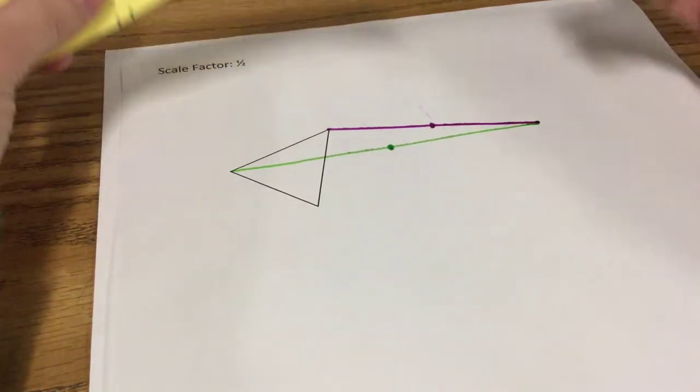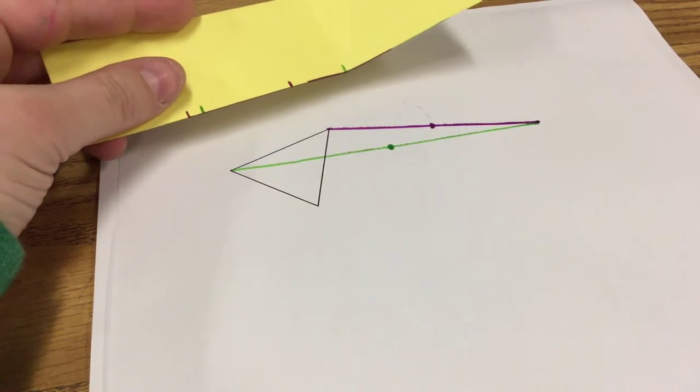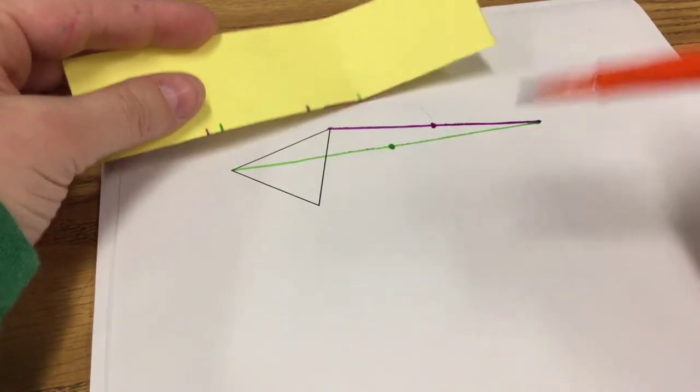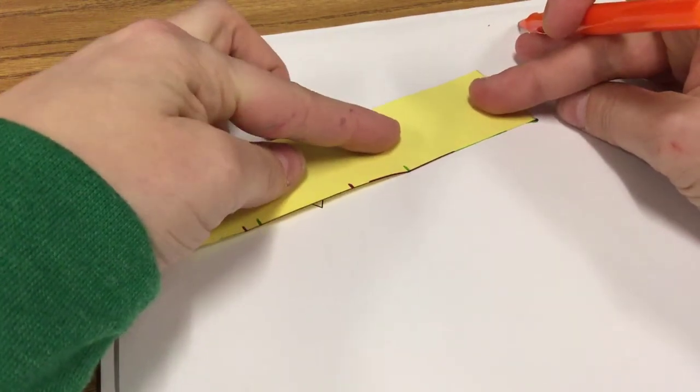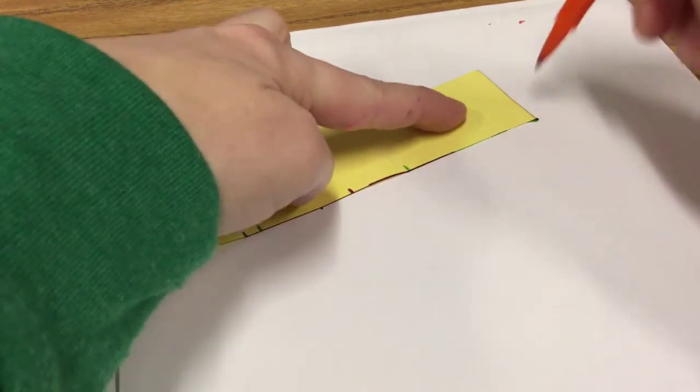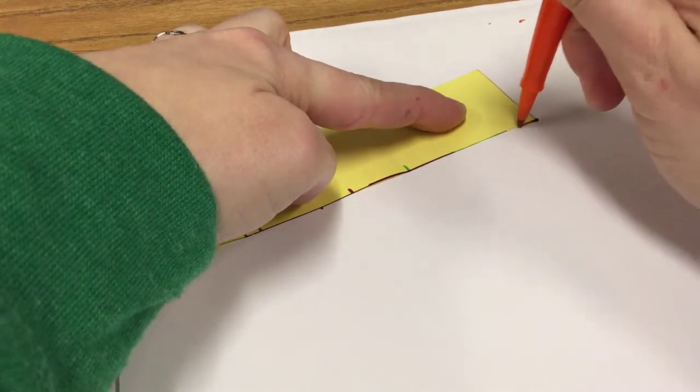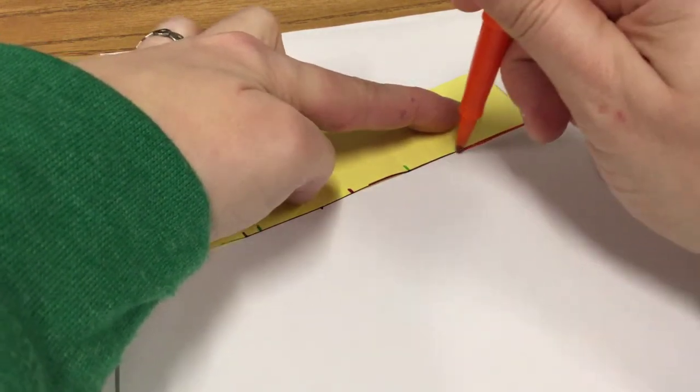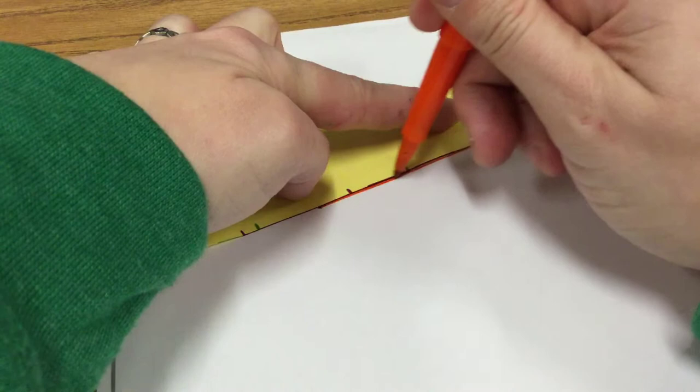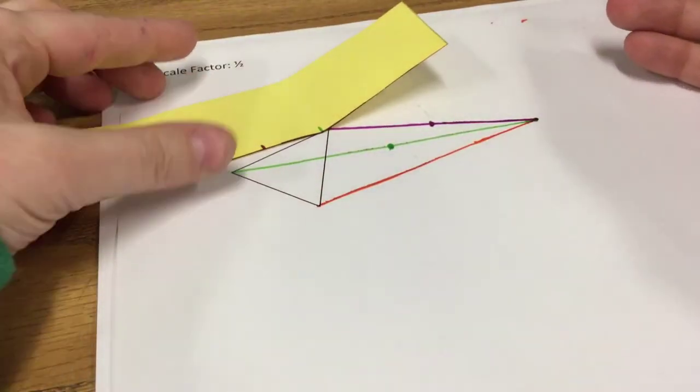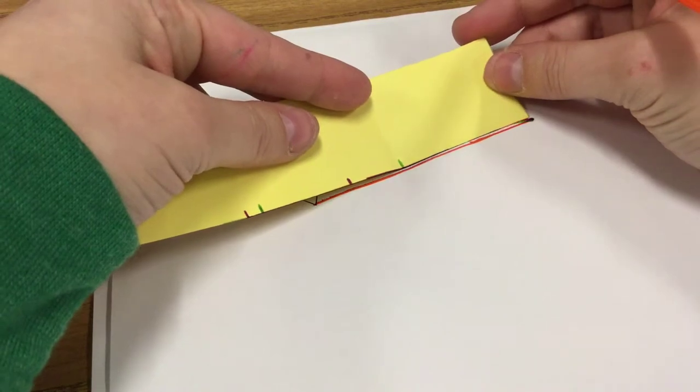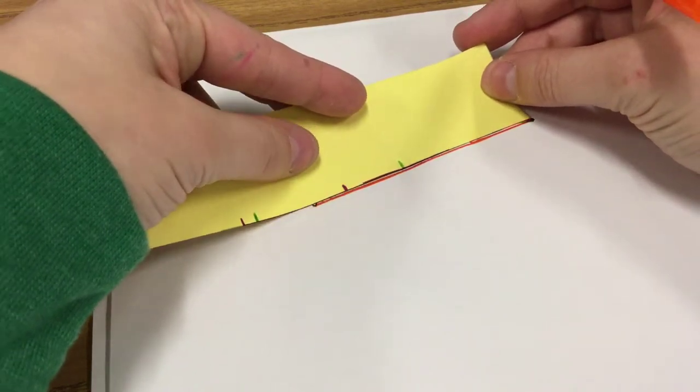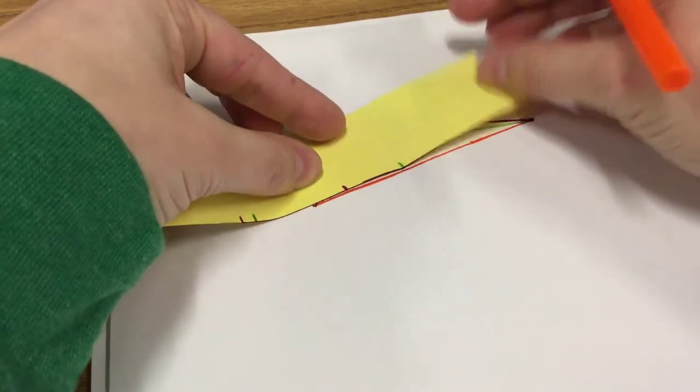Last vertex. Make sure you grab a new color of pen. Draw your line from the vertex to the center of dilation. Then make sure you line up the corner of your paper on the center of dilation and mark where the vertex of the triangle is.